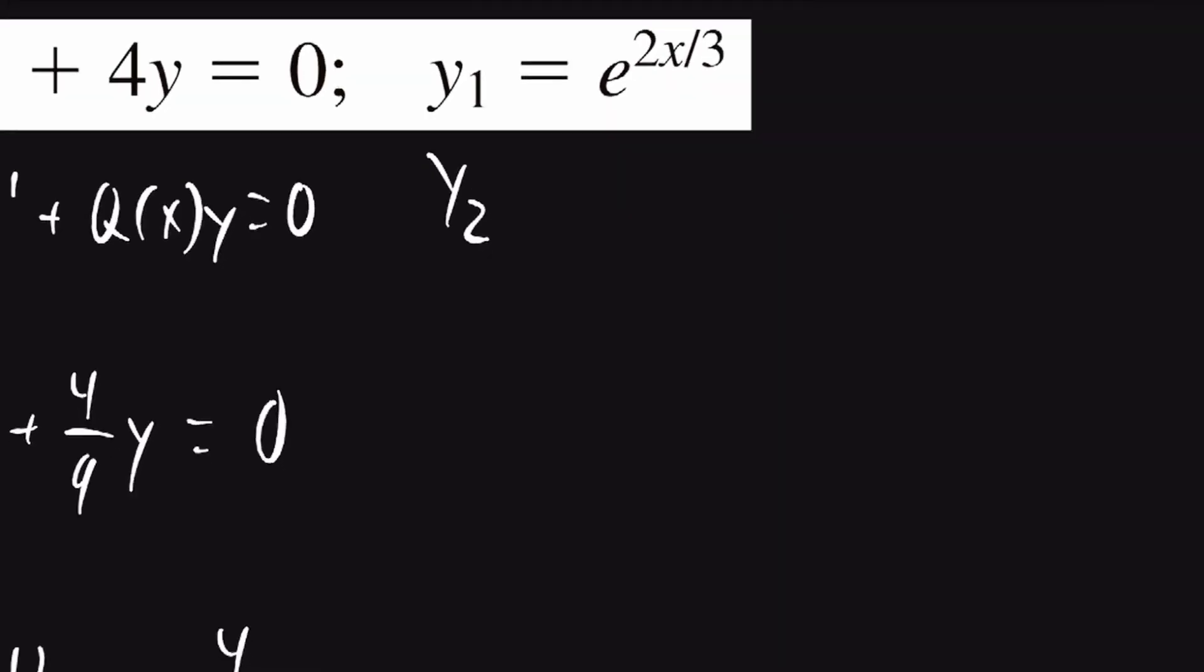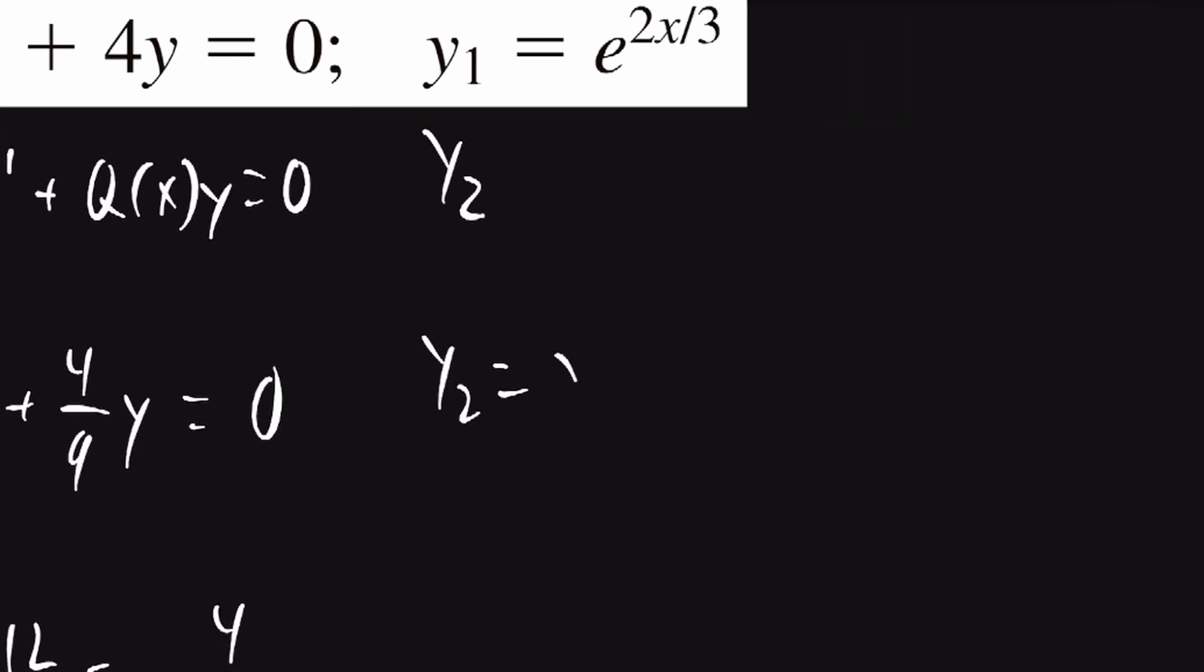We can now use the reduction of order formula. y2 equal to y1 times the integral of e to the power of the negative integral of p of x dx over y1 squared.